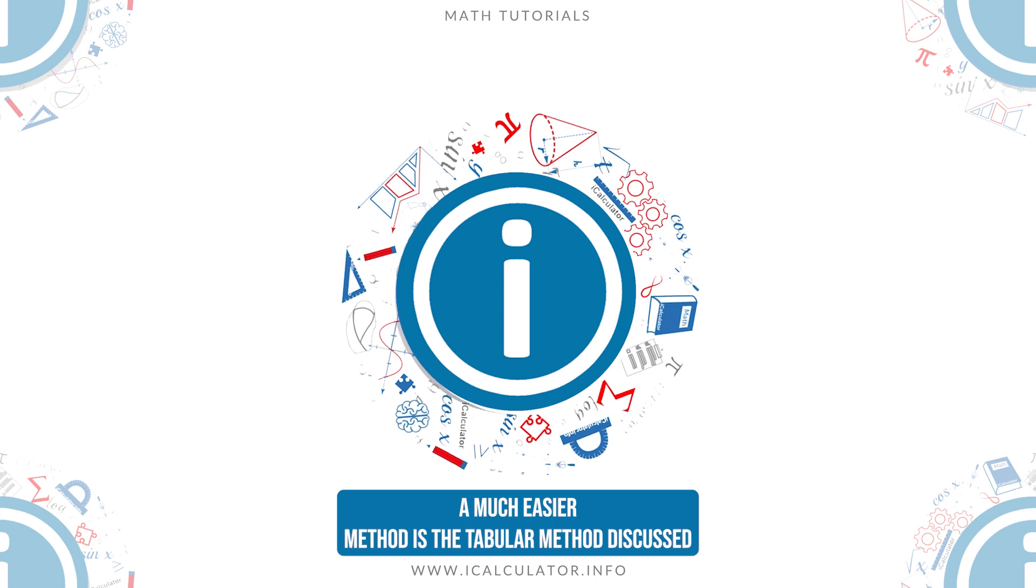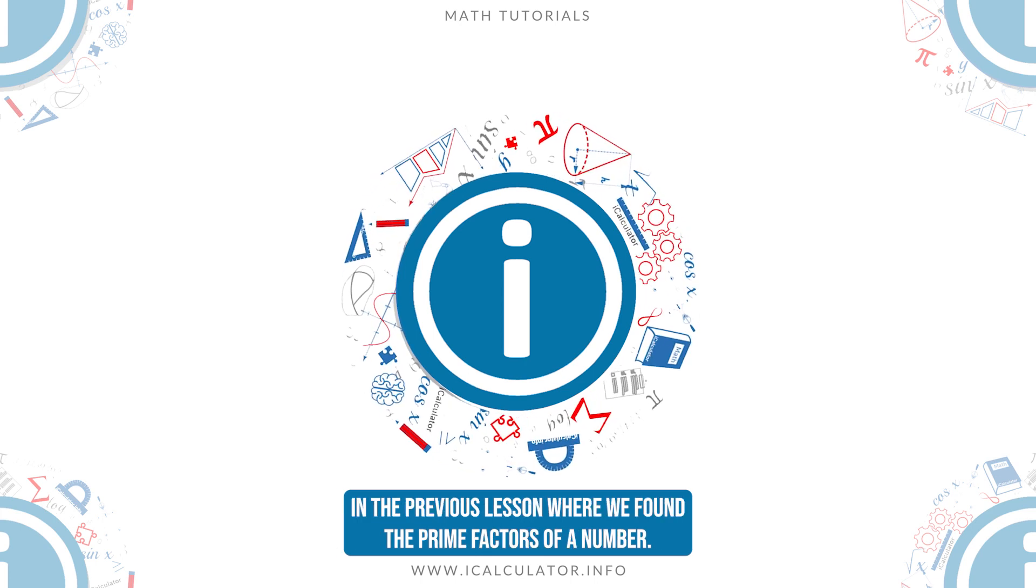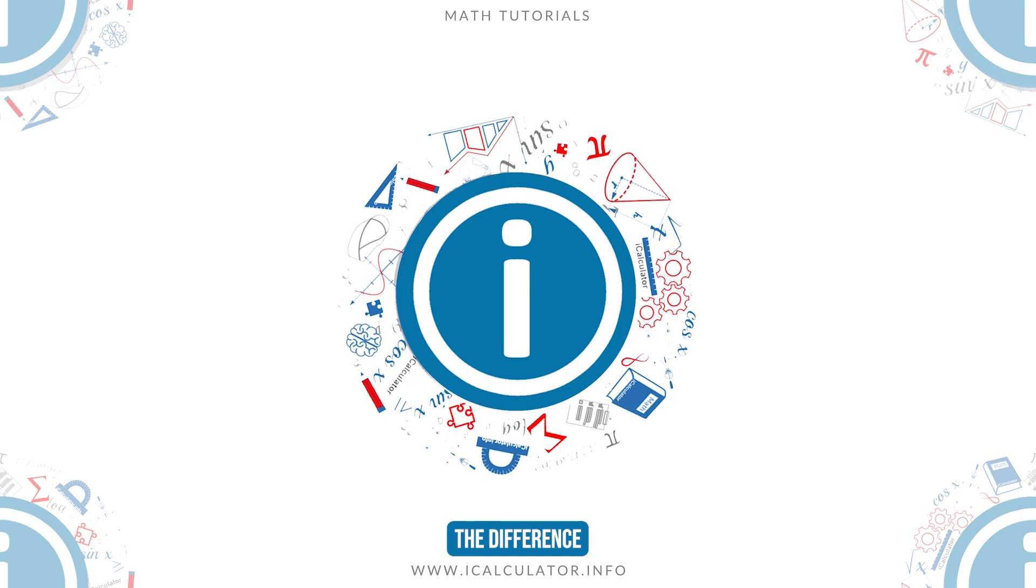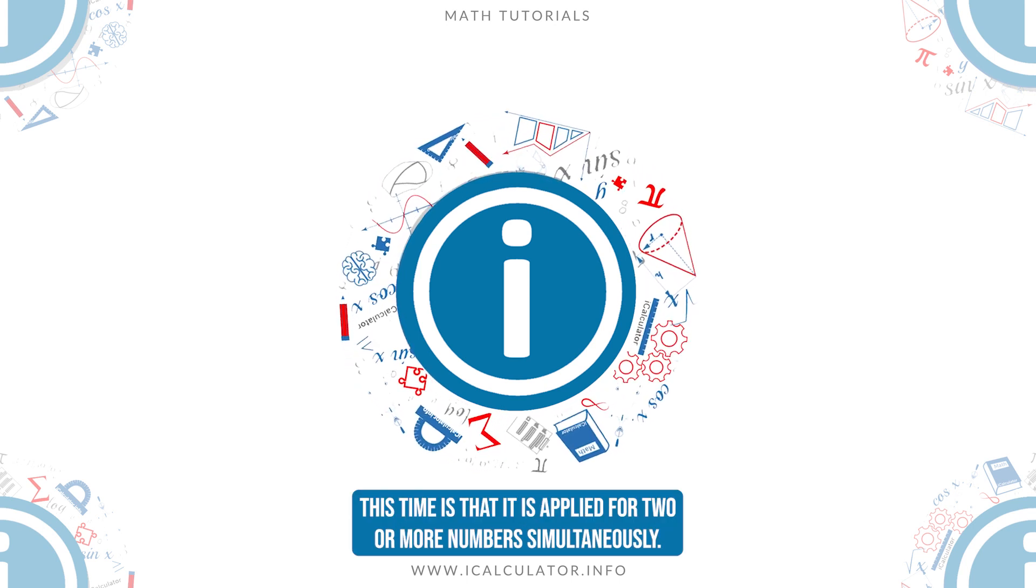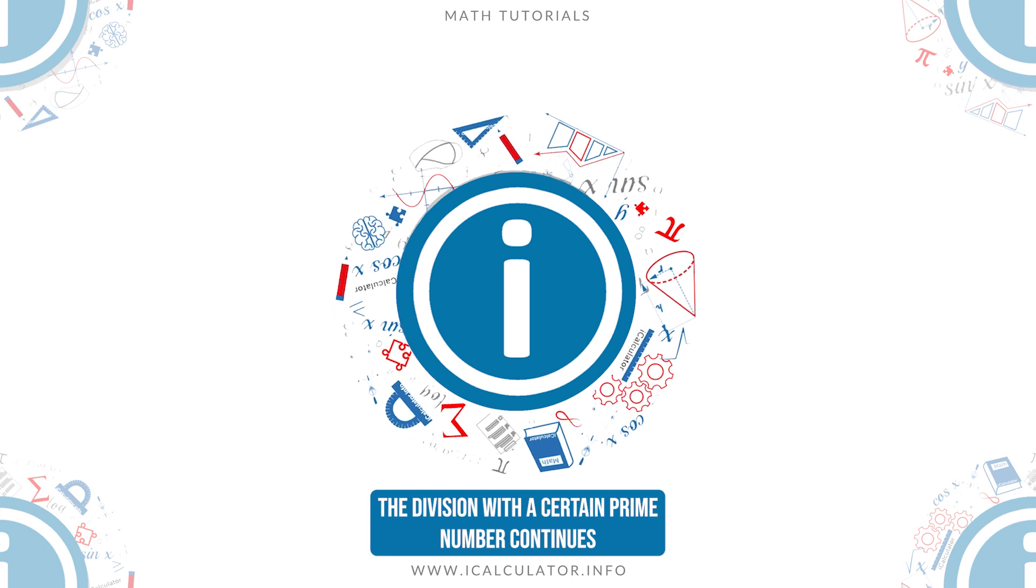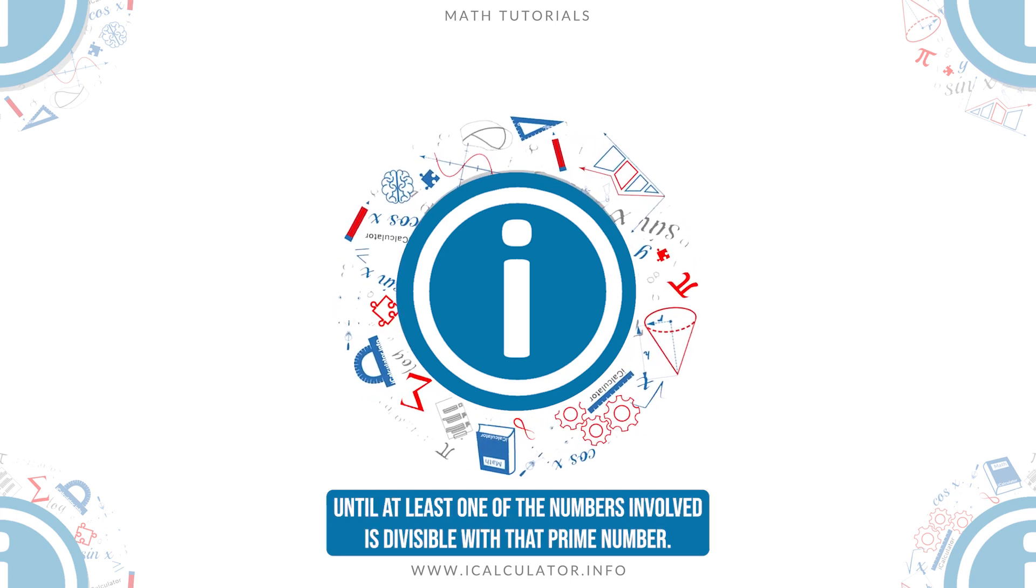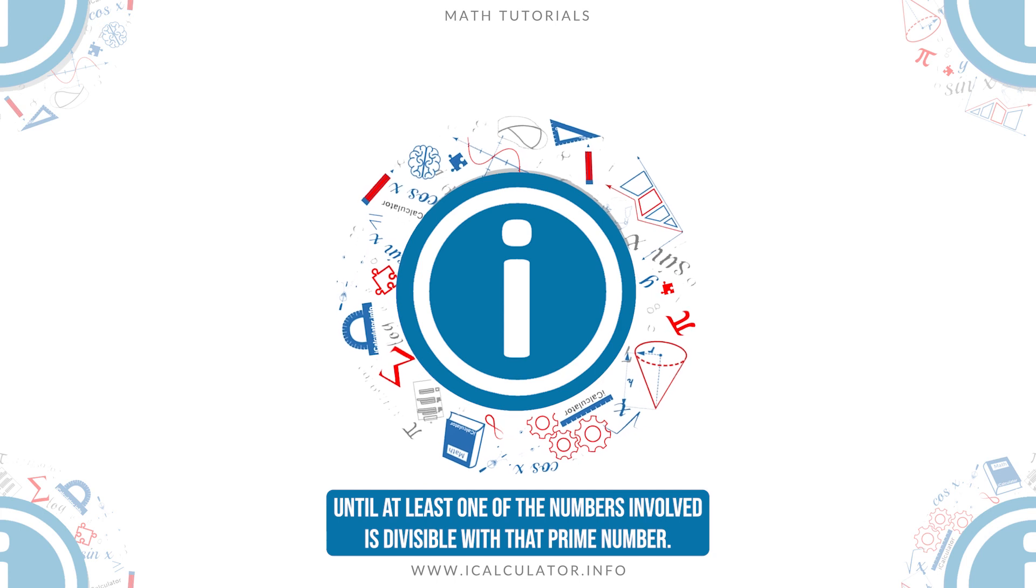A much easier method is the tabular method discussed in the previous lesson where we found the prime factors of a number. The difference this time is that it is applied for two or more numbers simultaneously. The division with a certain prime number continues until at least one of the numbers involved is divisible with that prime number.